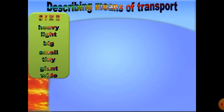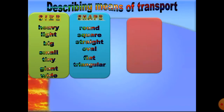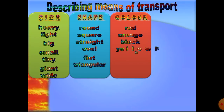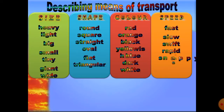Now, if you want to describe means of transport you need special adjectives. For size we have heavy, light, big, small, tiny — very small — giant, and wide. For shape we can say round, square, straight, oval, flat, or triangular. For color we can say red, orange, black, yellow, yellowish, blue, and dark.